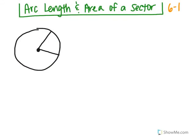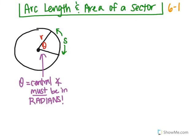In section 6-1, we're going to talk about arc length and the area of a sector. Think of a sector as a piece of pie. We have a central angle theta that makes up some portion of the whole circle, a radius R, and arc length denoted by S. The key thing to know is that your central angle theta must be in radians to use these formulas. You cannot use them unless you convert your angle from degrees to radians first.